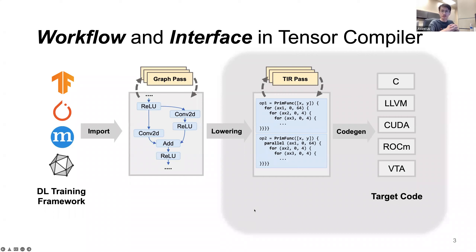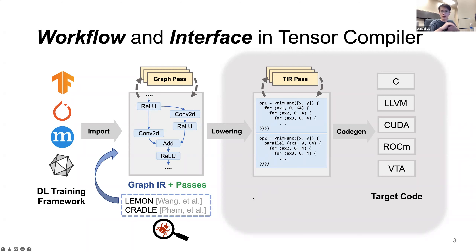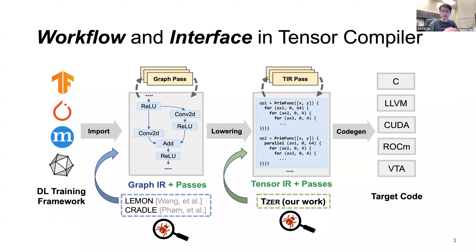To automatically generate test suites, we first need to determine the interface of testing. As shown in the workflow of a typical tensor compiler, the graph-level interface describes computation graphs in graph IR and uses many graph-level passes for optimization. Prior work has addressed testing at the graph level by generating various DNN models. Another interface is the tensor IR interface and its corresponding passes, which model various low-level hardware primitives. Our work, namely TEASER, focuses on fuzz testing at the low level, since there is limited research in this area and the TIR lowered from the graph level is only a subset of the whole IR space, which is insufficient to detect deep bugs.